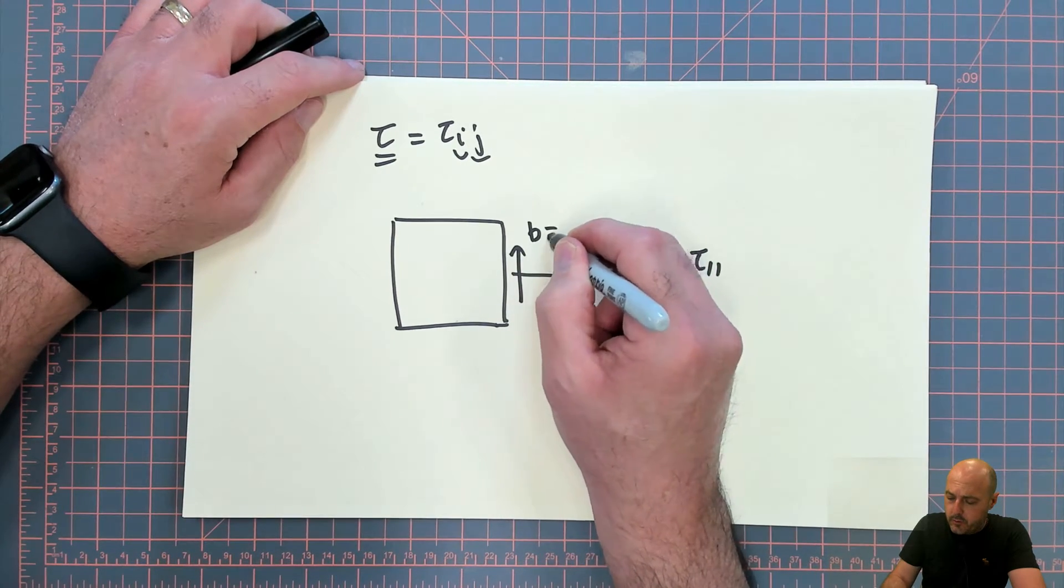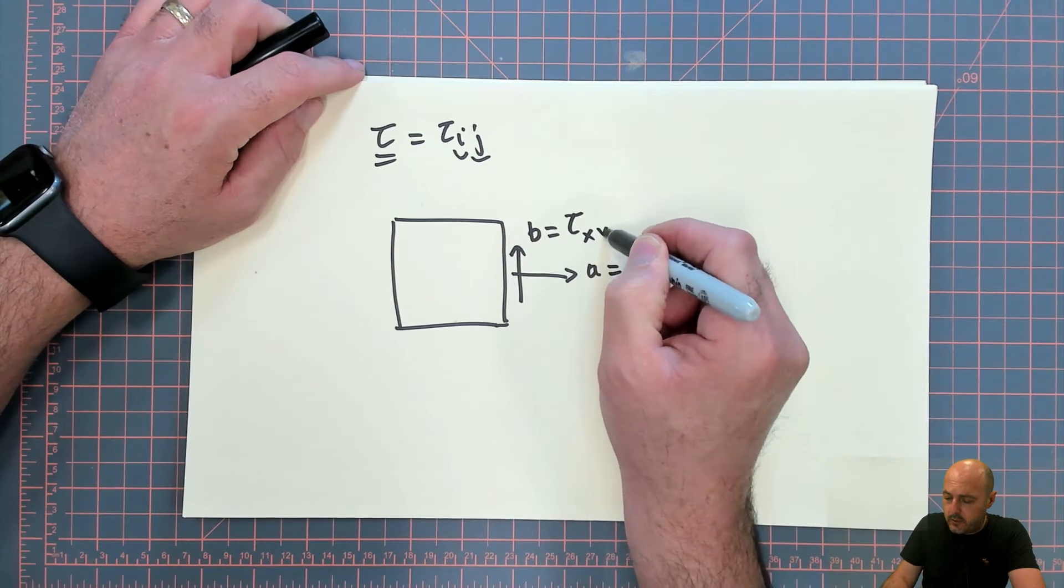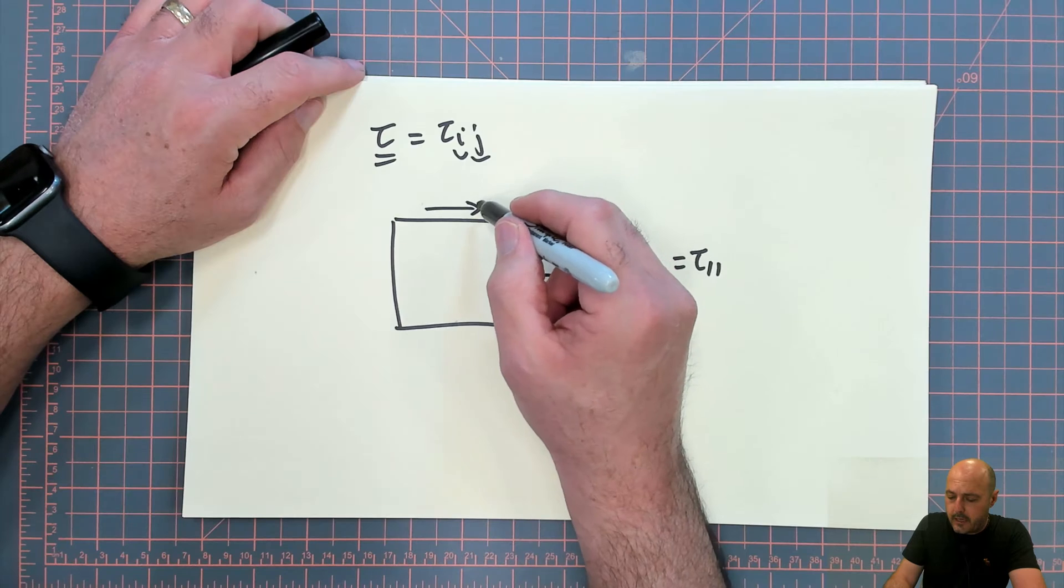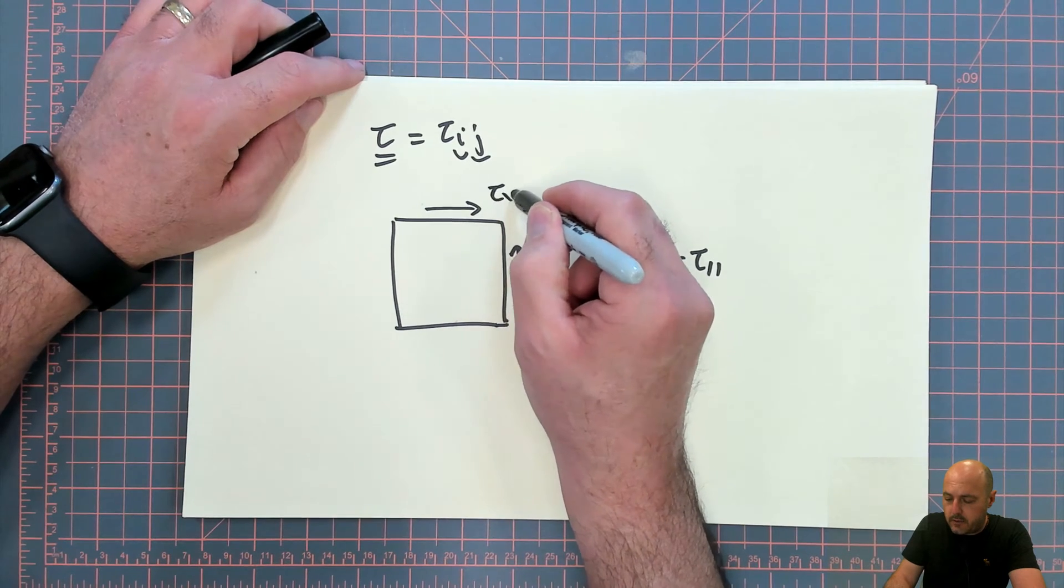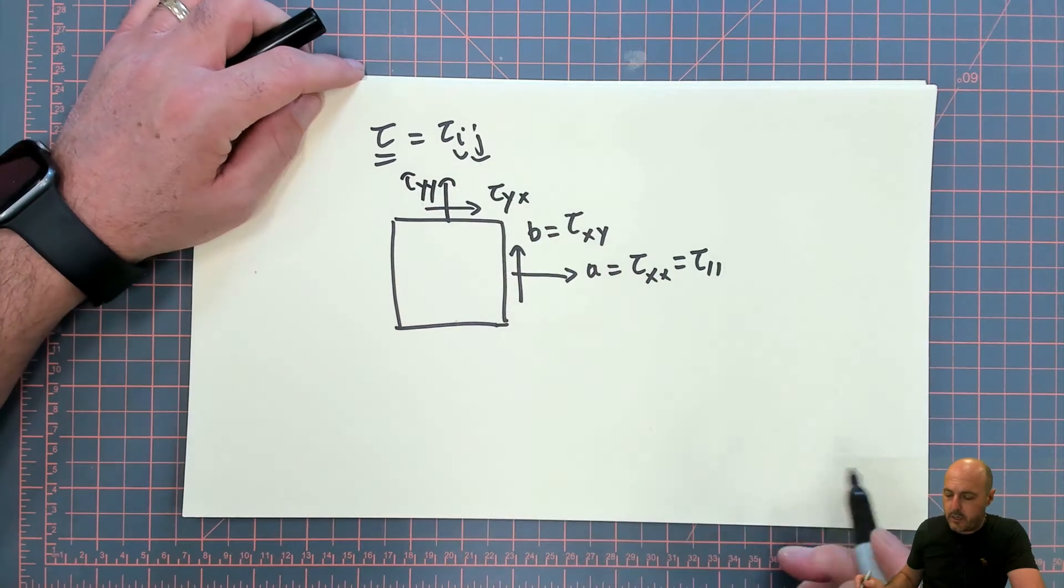If this component is b, this would be acting on an x face in the y direction, this one would be acting on a y face in the x direction, and this one would be acting on a y face in the y direction.